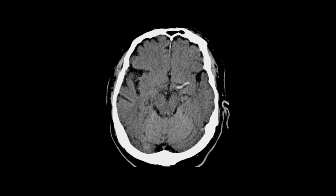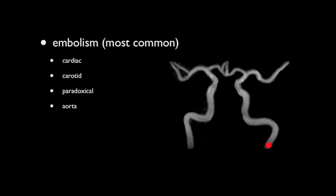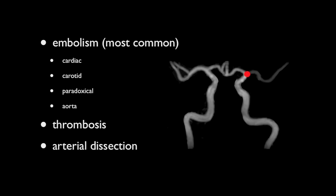In most instances, cerebral ischemia results from a thromboembolism, either from the heart or from the carotids. Rarely, it is also due to paradoxical emboli through the patent foramen ovale, or from aortic atherosclerotic disease, most commonly seen in the setting of angiography or cardiac surgery. In situ thrombosis within the cerebral circulation is seen either superimposed on pre-existing atherosclerotic disease or in the setting of arterial dissection.